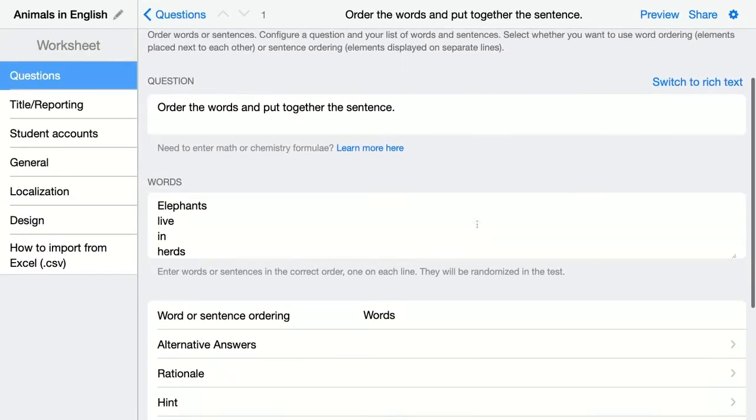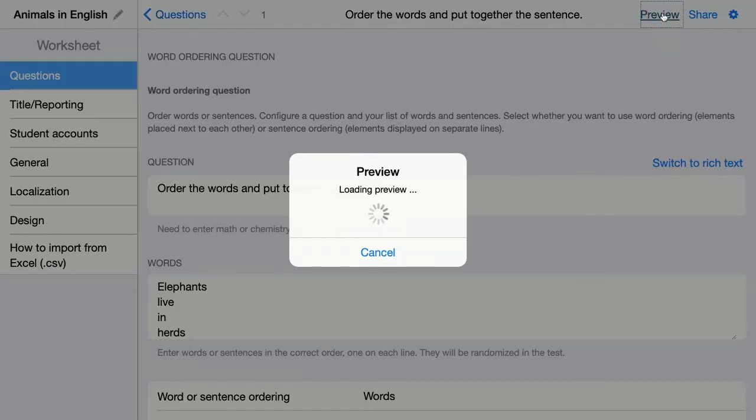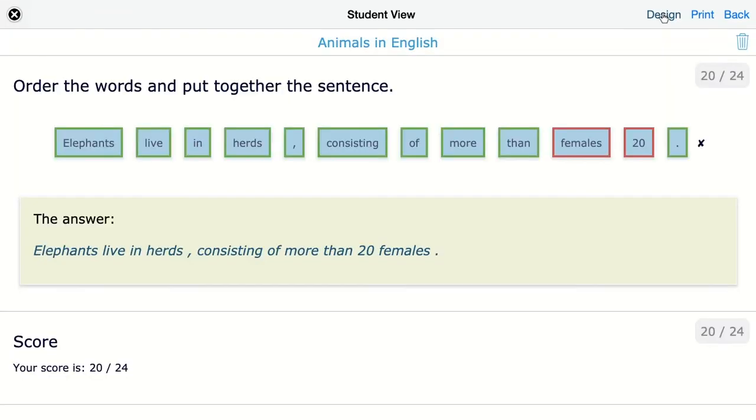If I change the scoring options here to score points for each element in the correct position, then I go to preview again, then you can see that it changes. So here it's created otherwise and you can see that I just got 24 because I just got these two wrong.